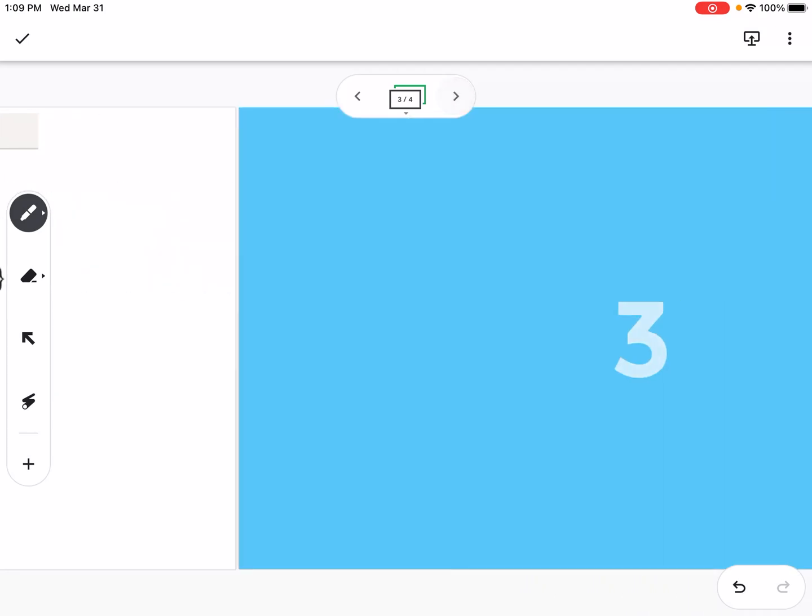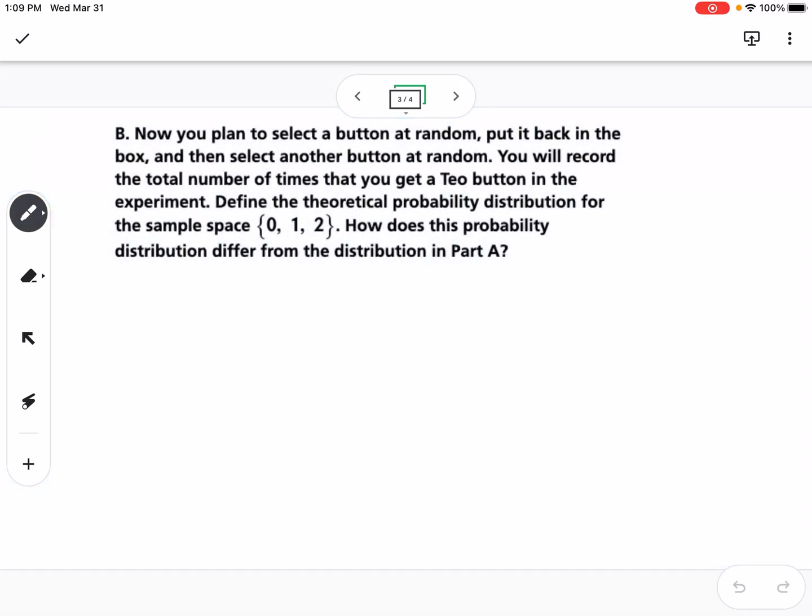Then the second part says, now you plan to select a button at random, put it back in the box, and then select another button at random. You will record the total number of times that you get a Tio button in the experiment. Define the theoretical probability distribution for the sample space, zero, one, or two. How does the probability distribution differ from the distribution in part A?